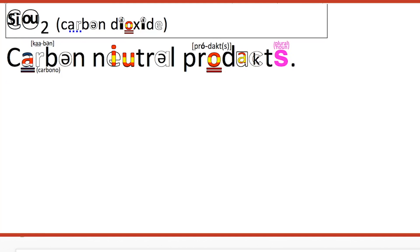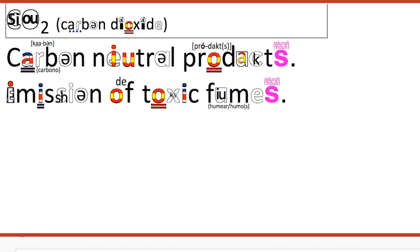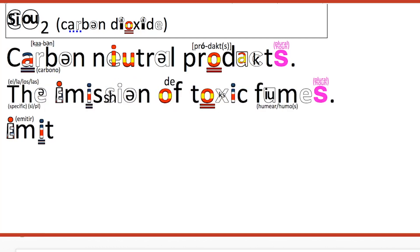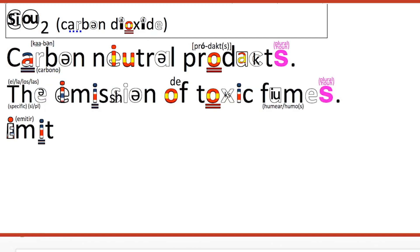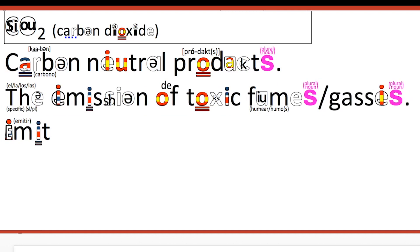You could talk about the emission of toxic fumes. The verb is 'to emit' and the noun is 'emission' — the emission of toxic fumes, or gases as well. This is not pronounced 'gases' — it's 'gases'.